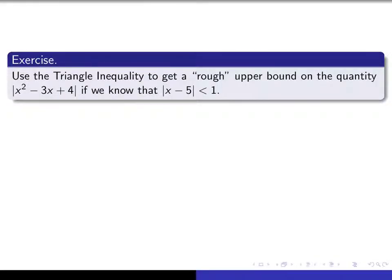Here's your first exercise. I want you to make use of the triangle inequality in order to get an upper bound on the quantity absolute value of x squared minus 3x plus 4, making use of the fact, or the assumption, that the absolute value of x minus 5 is smaller than 1. I want you to do it using the triangle inequality, even if you know another way of doing it.